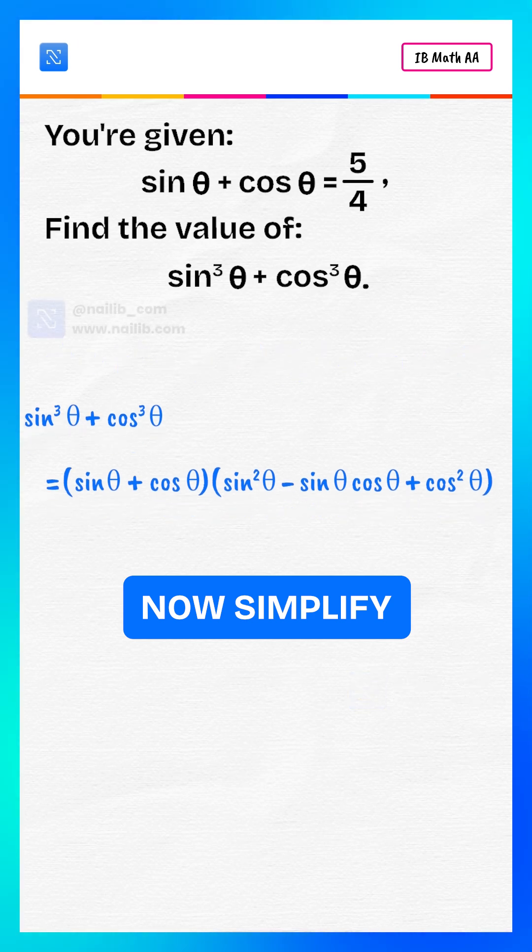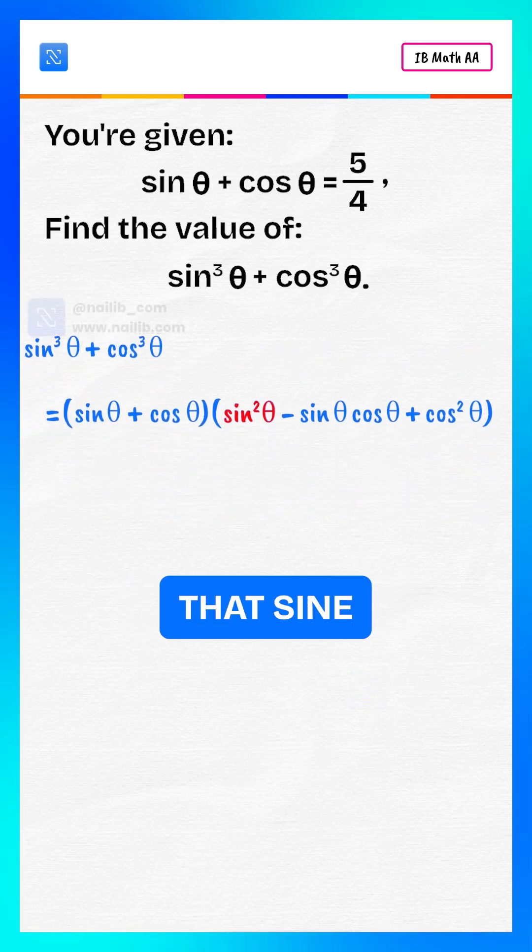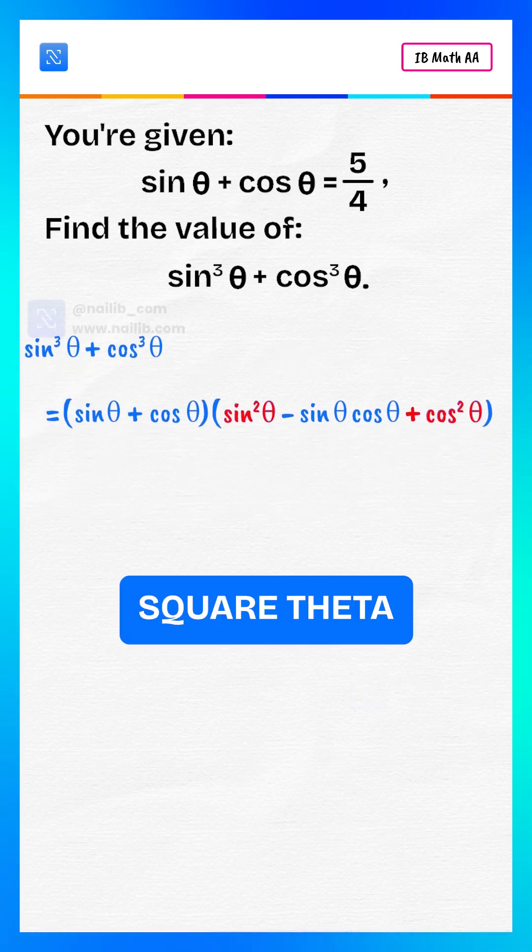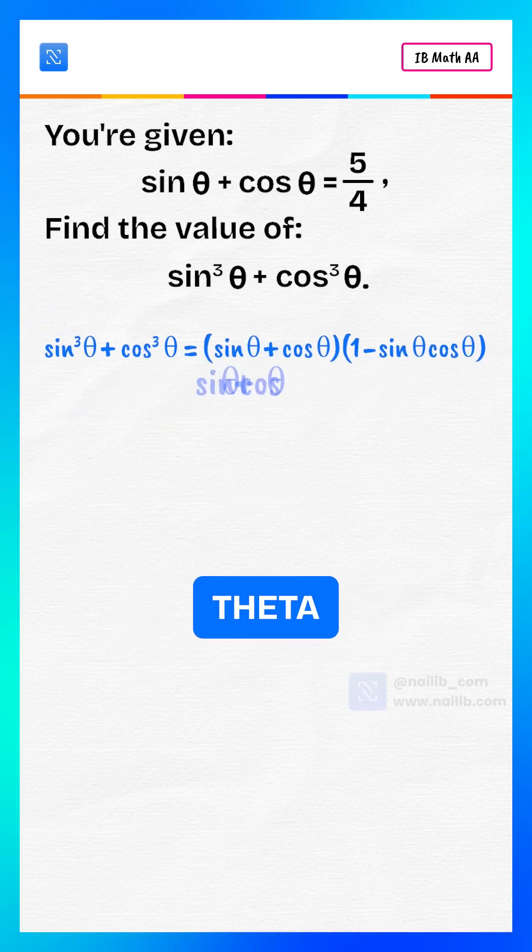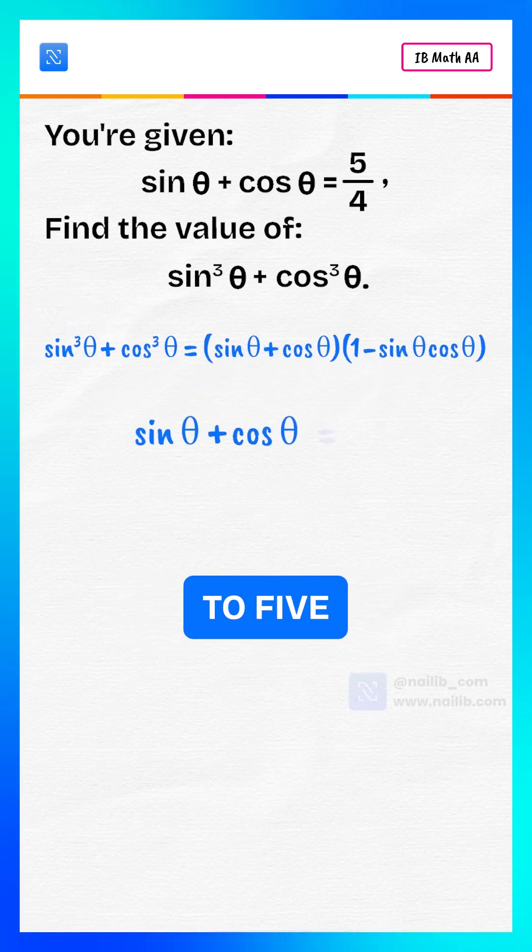Now, simplify the terms. We know that sin²θ + cos²θ = 1, and we're given sin θ + cos θ = 5/4.